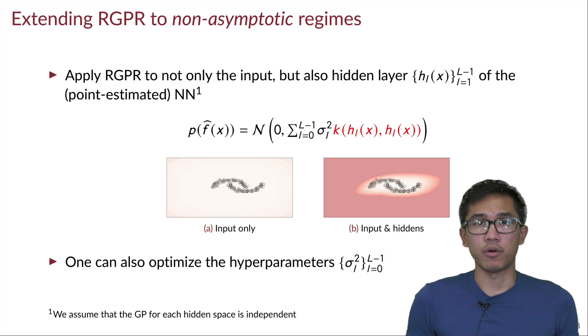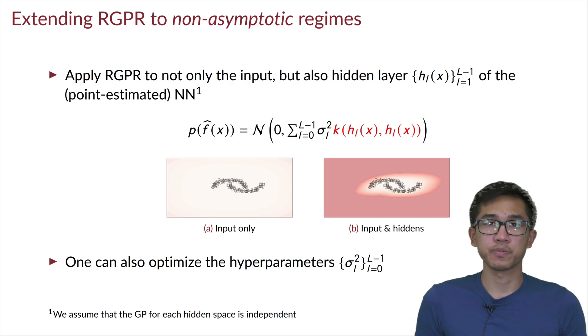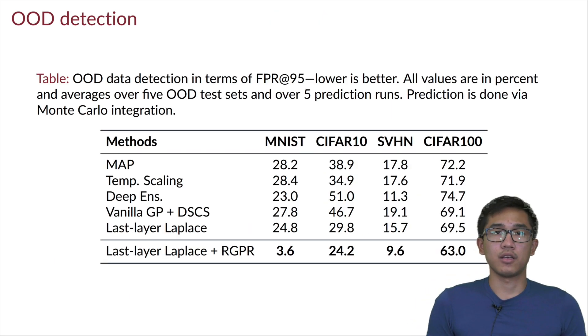And furthermore, we can also do hyperparameter tuning on these kernel hyperparameters arising from this process, and indeed it's very useful for modeling the uncertainty near the training data.